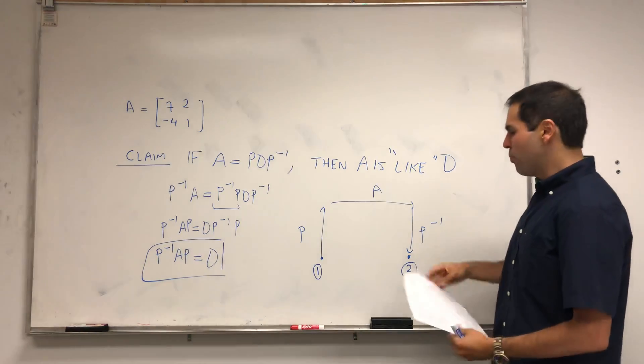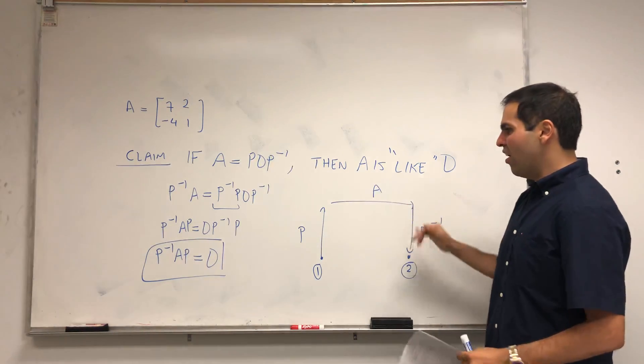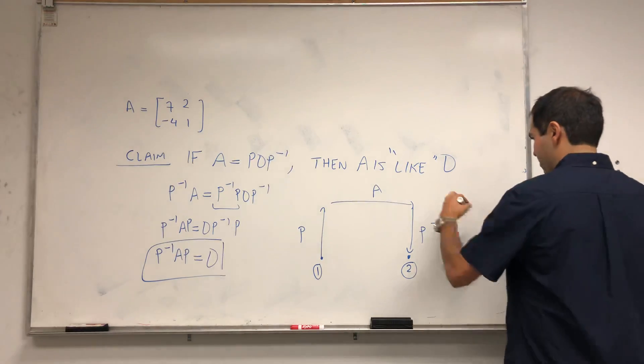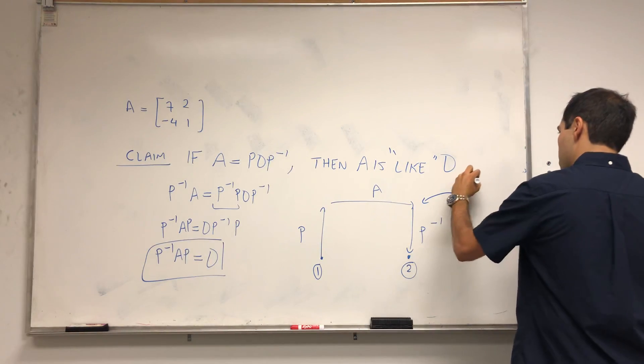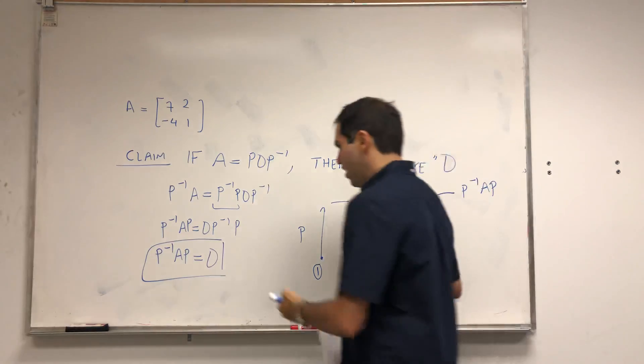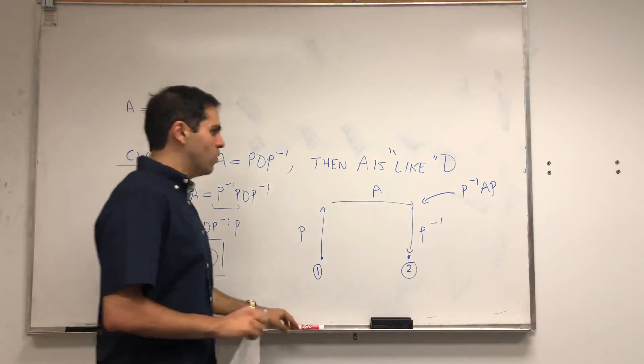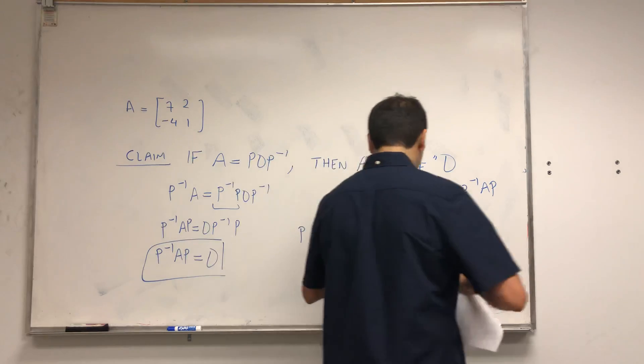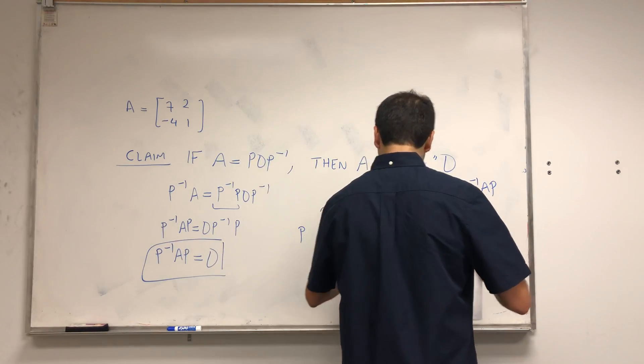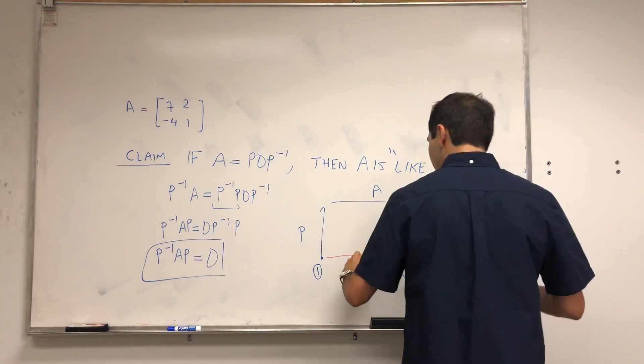And so this whole process is called P inverse AP. On the other hand, we know that this equals D. So this whole thing is like D.